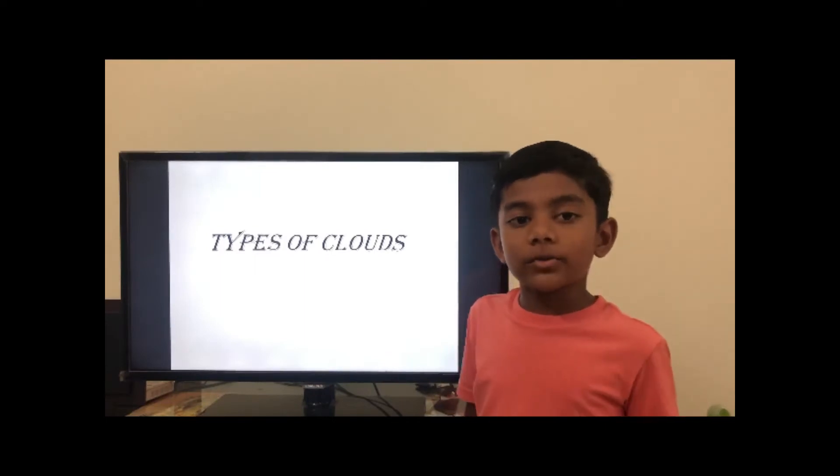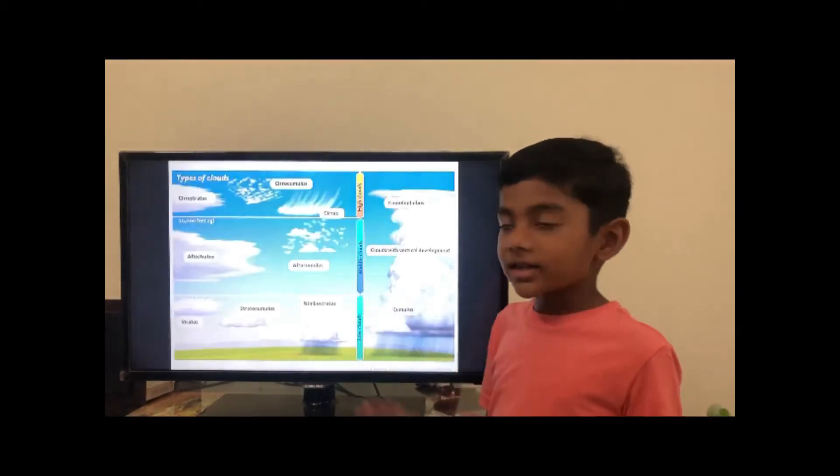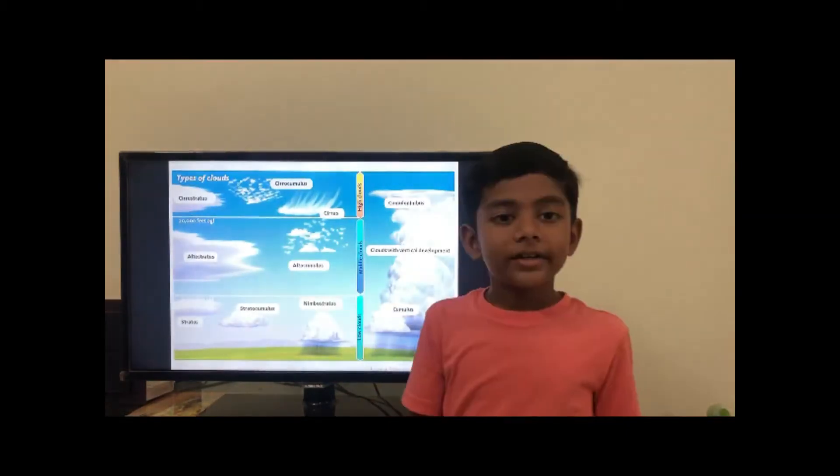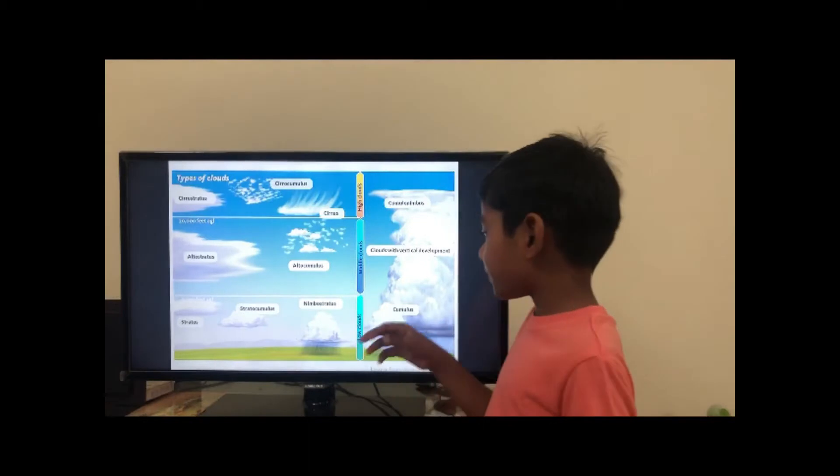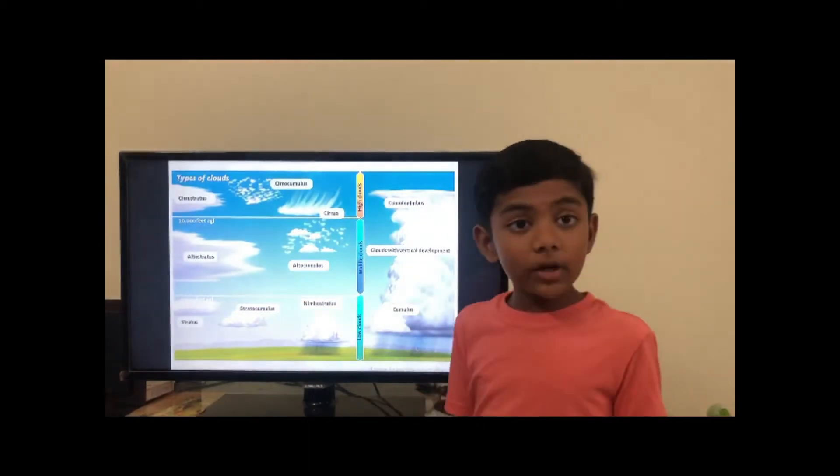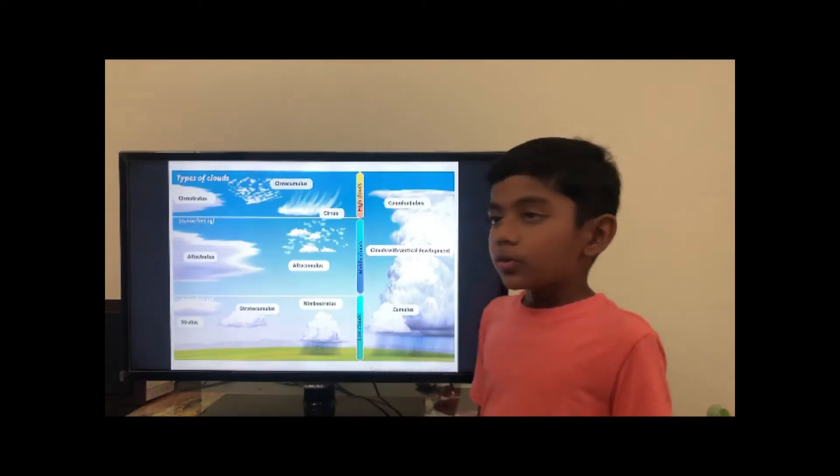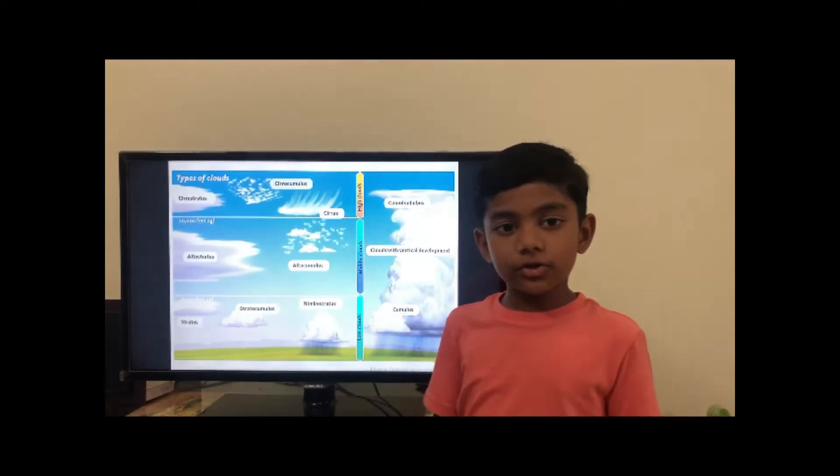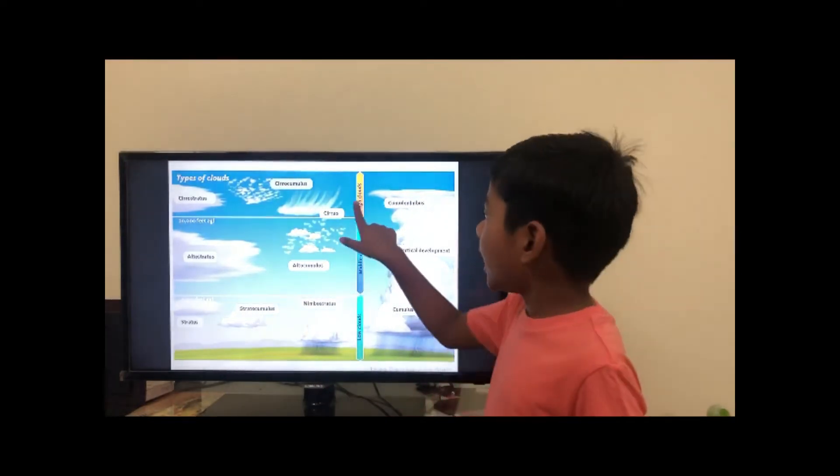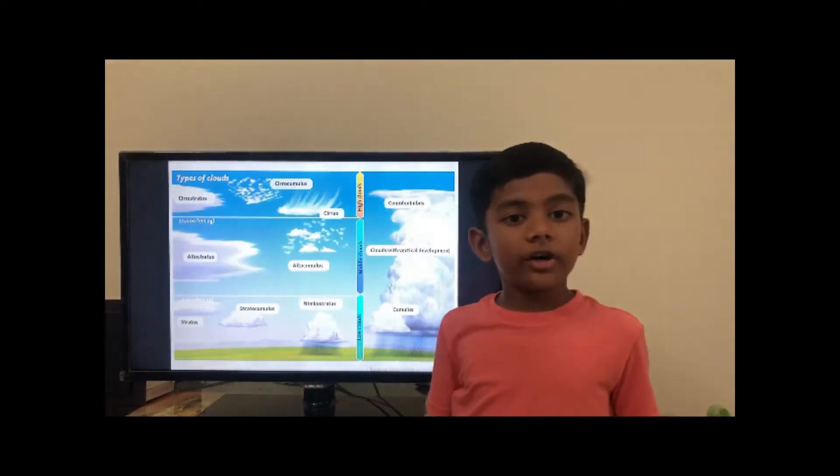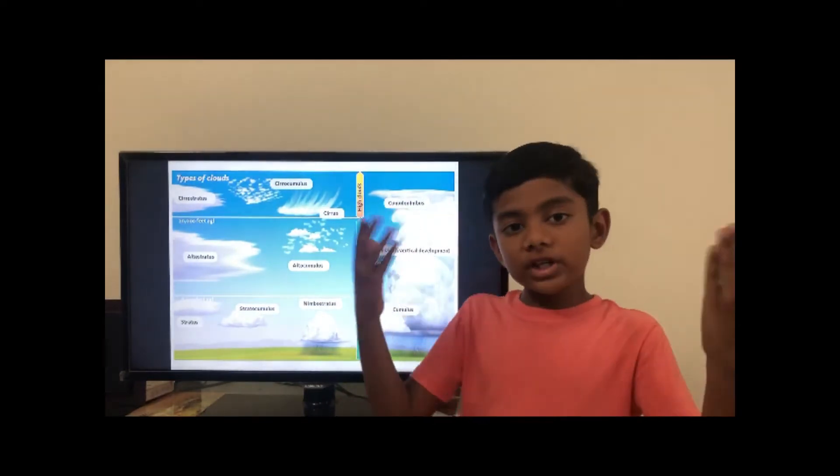Hey guys, welcome back to my channel. Today I'm going to talk about types of clouds. Let's start. There are three types of clouds: low clouds which are below 6,000 feet, mid clouds which are 6,000 feet to 20,000 feet, and high clouds which are above 20,000 feet.